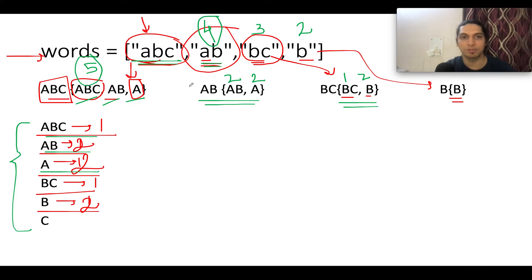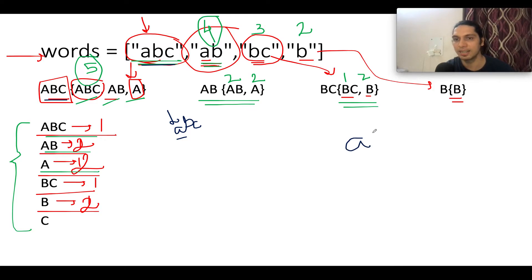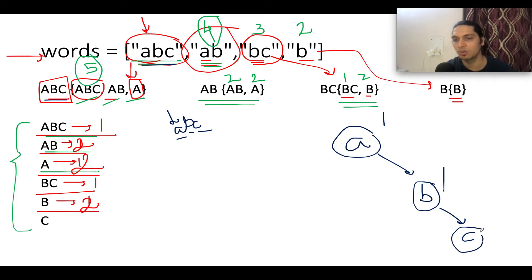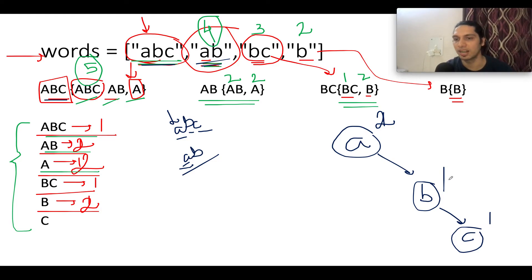Let's start the trie construction from the first string 'abc'. The first character is 'a' — we create the trie node for 'a' with a score of one. The next character is 'b' — we start a new branch from 'a' with 'b' and a score of one. Next is 'c' — we add 'c' with a score of one. Now the next string is 'ab' — we update the score of 'a' to two and the score of 'ab' to two.